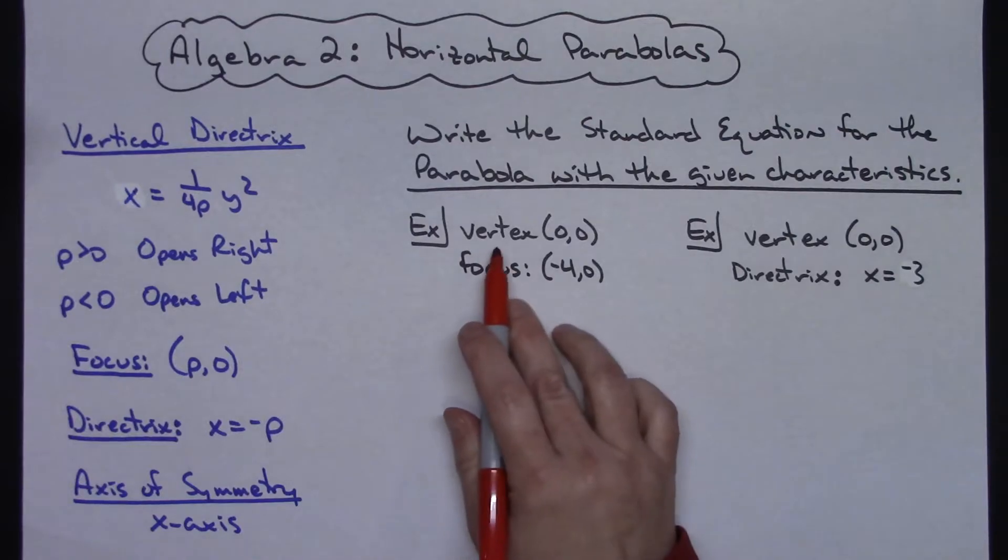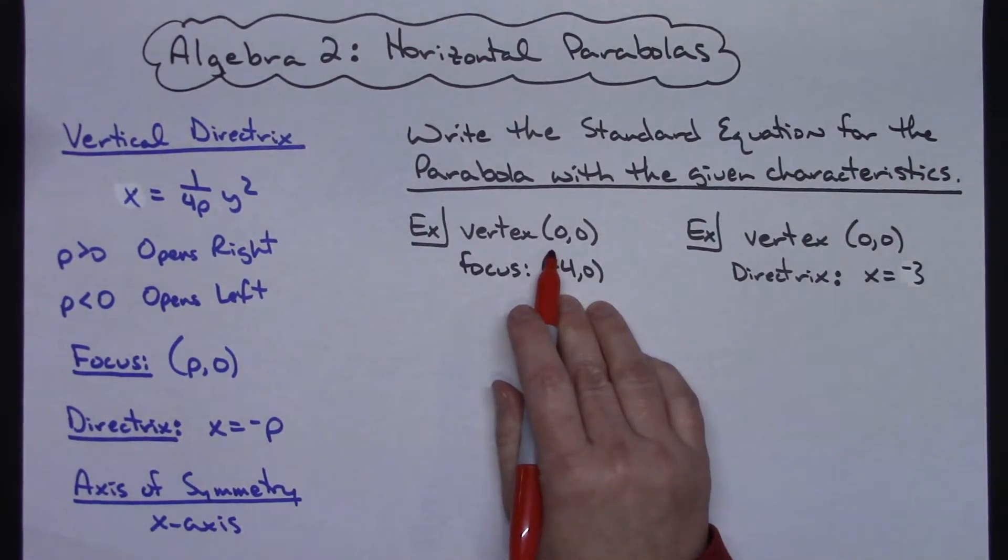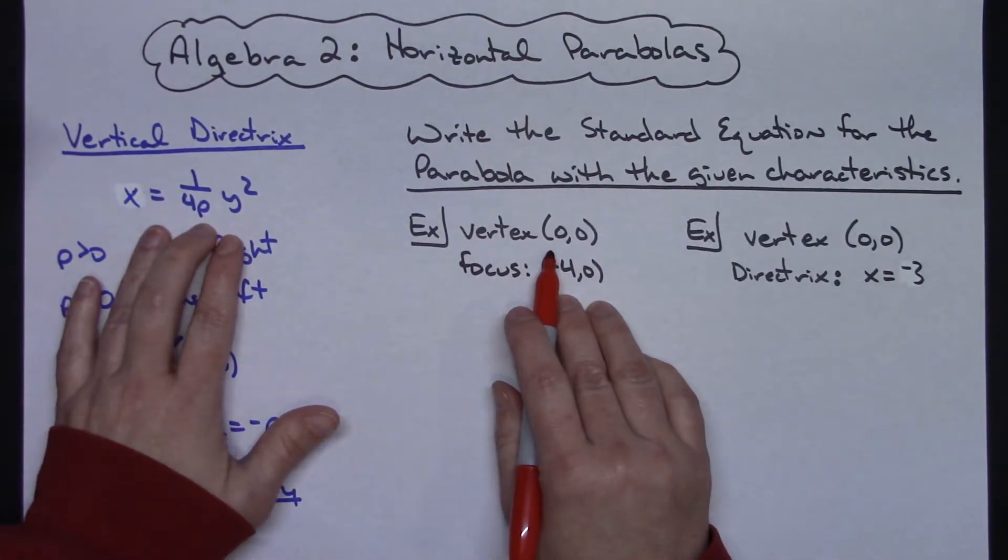In my first example here we've got a vertex at 0,0 and we've got a focus at negative 4, 0. Now what that tells us right there is since our vertex is at 0,0 this is what our equation is going to look like.